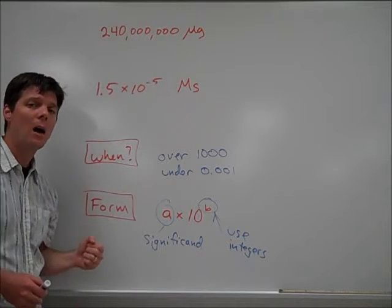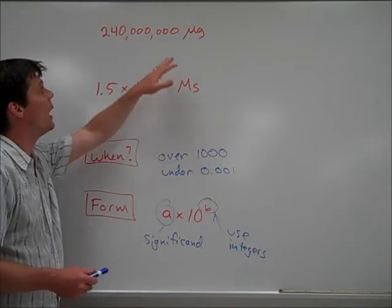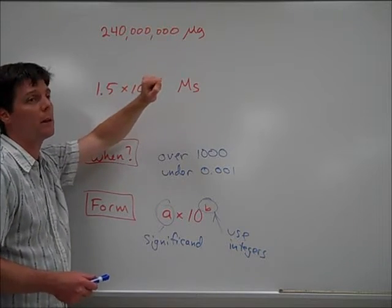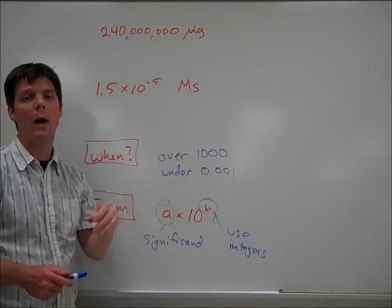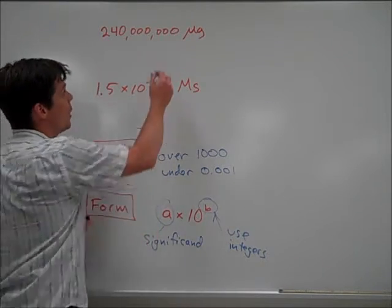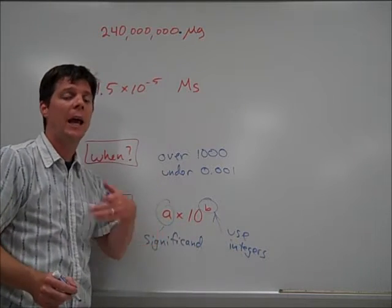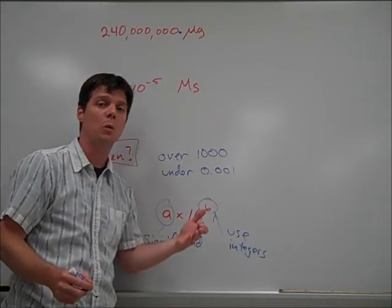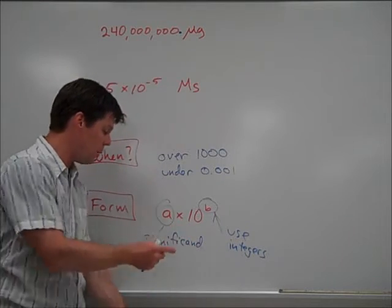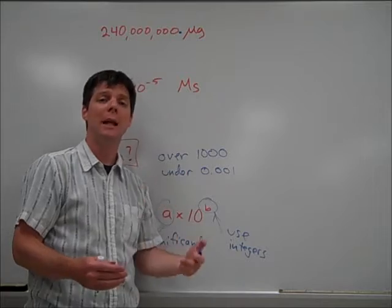Let's take a look now at a couple of examples. Here's a number that we've seen previously. It's a number of micrograms that we calculated in a conversion. We want to go ahead and convert this to scientific notation. So, it's not there, but let's go ahead and put the decimal in. And all we need to do now is to count over how many places would we move the decimal to produce a number which is going to give us a significant which is at least 1 but less than 10.